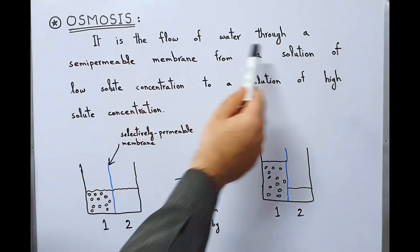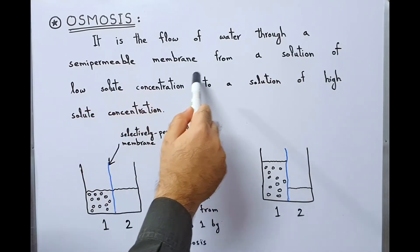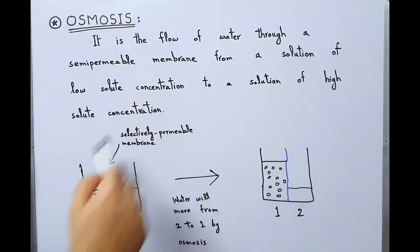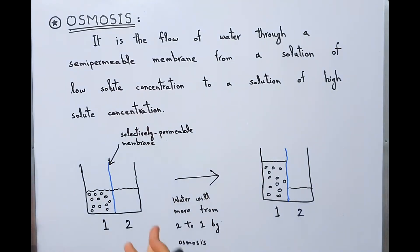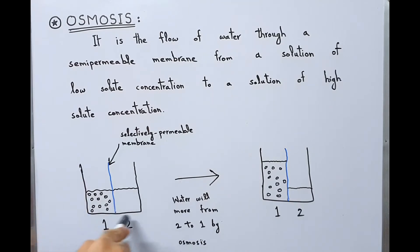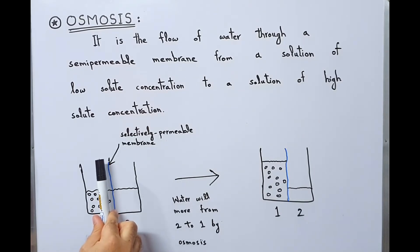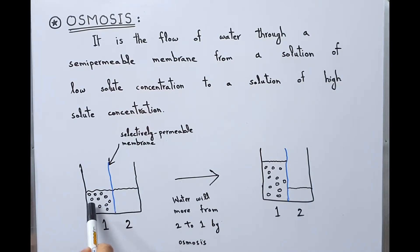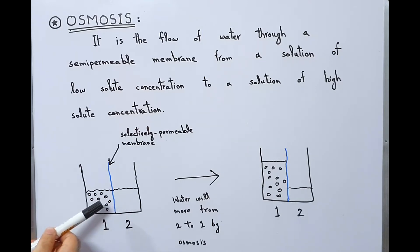Osmosis is the flow of water through a semi-permeable membrane from a solution of low solute concentration to a solution of high solute concentration. Let's understand this concept by an example. Suppose this is a jar containing two solutions — solution 1 and solution 2 — and in between them is a semi-permeable membrane separating the two solutions.